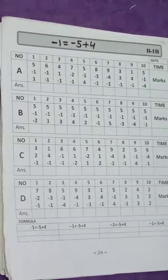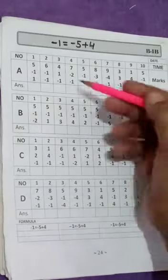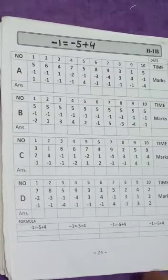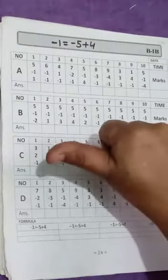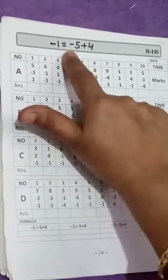Hello students, today we will do page number 24, A and B column. Your right hand is your 1's hand. Now we will follow this rule.